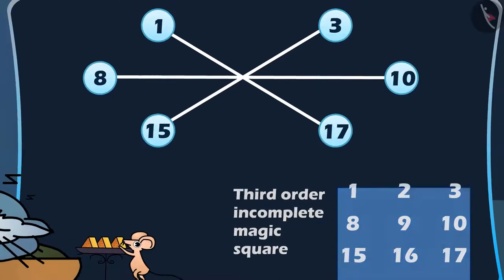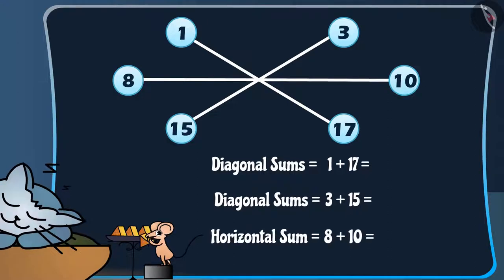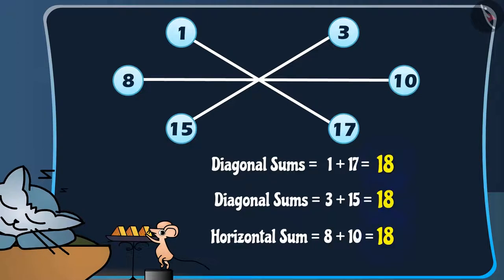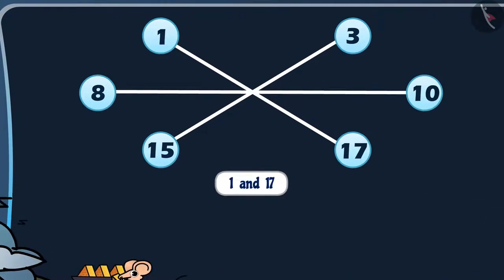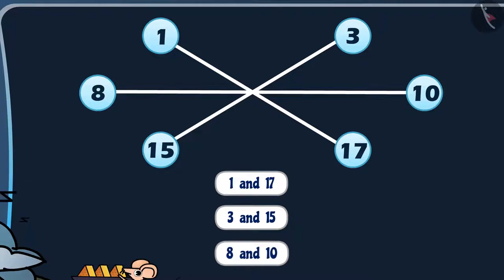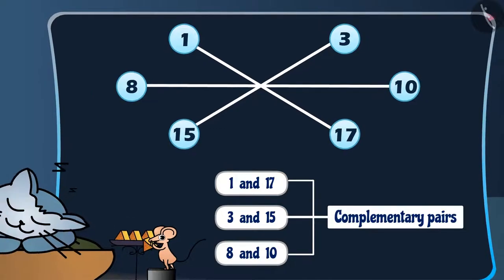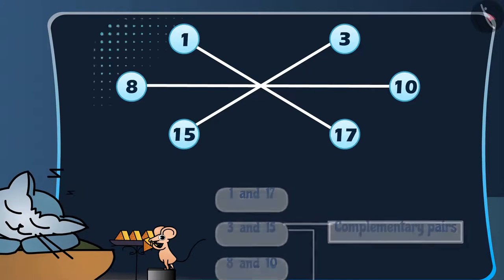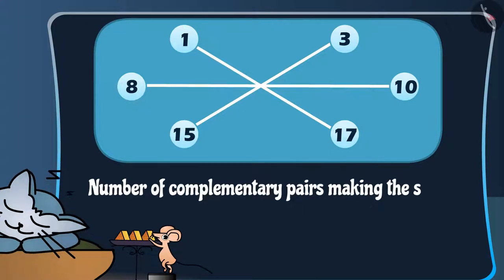Now you can see that the 2 diagonal sums and a horizontal sum are equal. Here, 1 and 17, 3 and 15 and 8 and 10 form the complementary pair. Hence, we can say that the order of the star puzzle is the number of complementary pairs making the star.